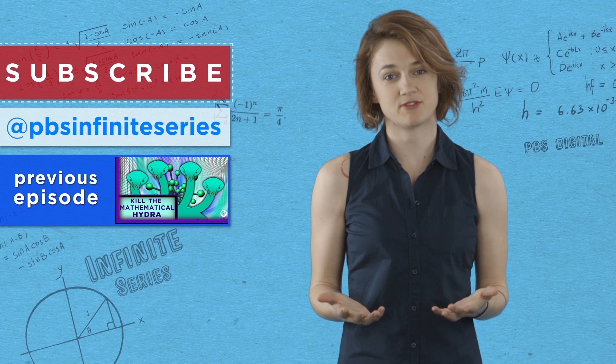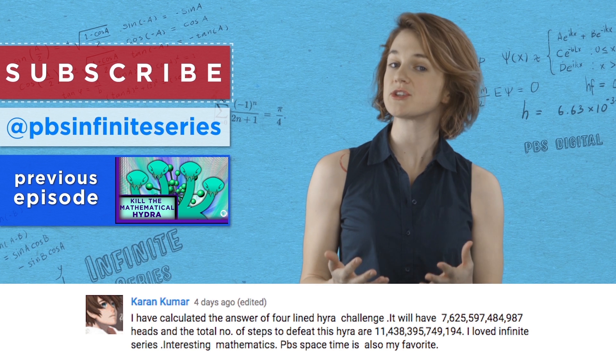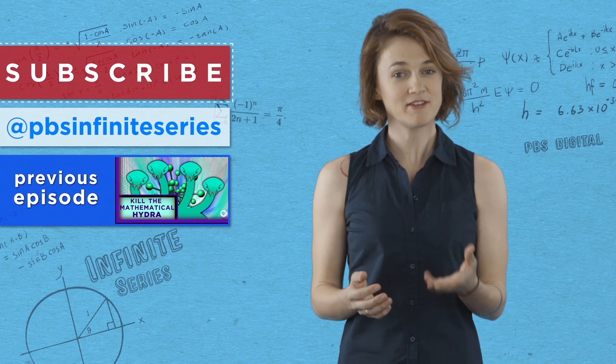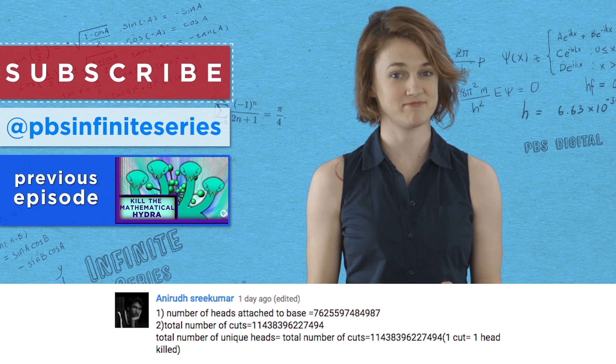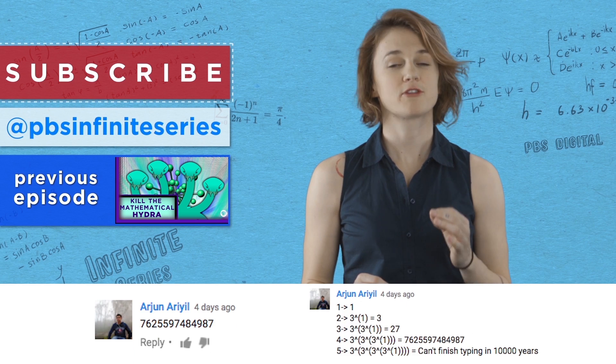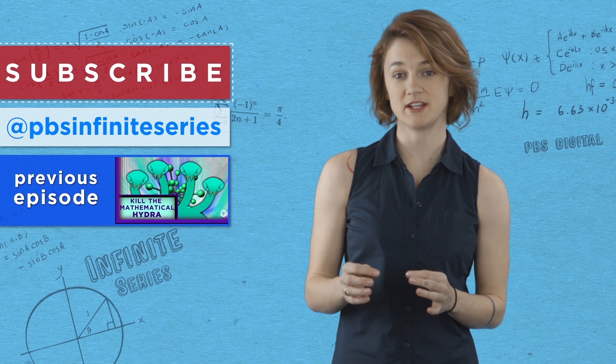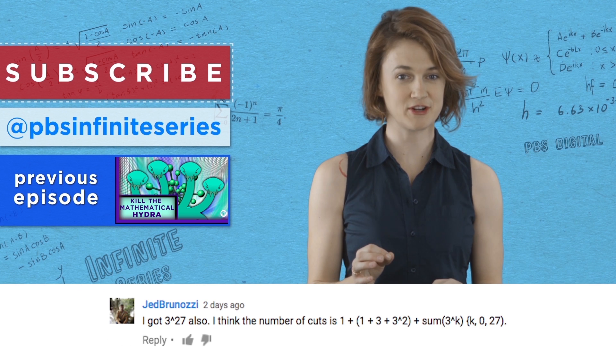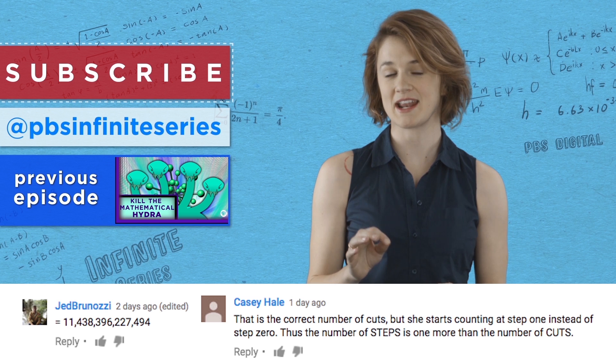Let's apply this to our Hydra, where K equals 27. The answer to the first question is that it'll end up with 3 to the 27 or 7,625,597,484,987 heads. And the answer to the second question is that it'll take 15 steps plus 3 to the 28 minus 1 all divided by 2 steps before the Hydra is defeated, which means it'll finally be done at step 11,438,396,227,495.